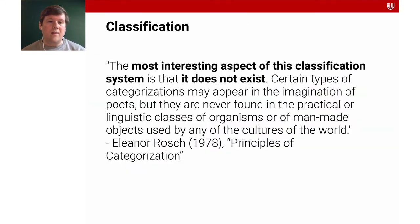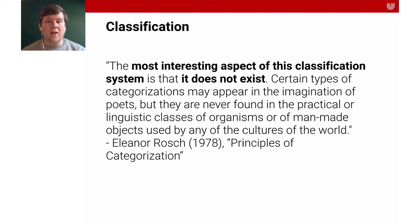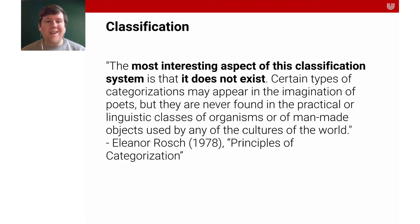However, if we look at some theory behind this, Elena Roche said that the most interesting aspect of this classification system is that it does not exist. Certain types of categorization may appear in the imagination of poets, but they are never found in the practical or linguistic classes of organisms or of man-made objects used by any of the cultures of the world. This gives us a feeling that we are defining a task — we make an abstraction and decide that a distinction is relevant. That's what classification is all about.